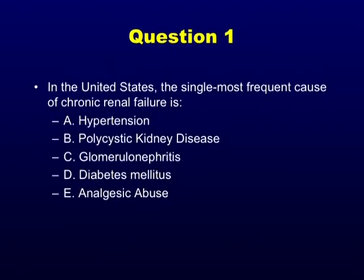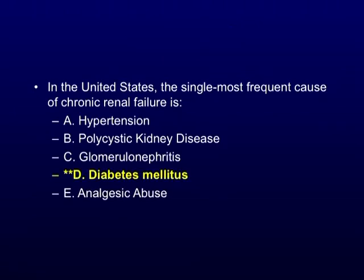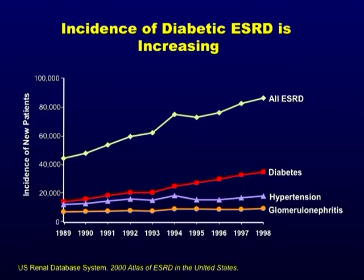What's the most frequent cause of chronic kidney disease in the United States? The people who got 3% hypertension weren't paying attention, but 97% of people got it and you're going to pass all the questions in nephrology. If you look at the causes of kidney failure in the United States, diabetes is definitely the most common cause.